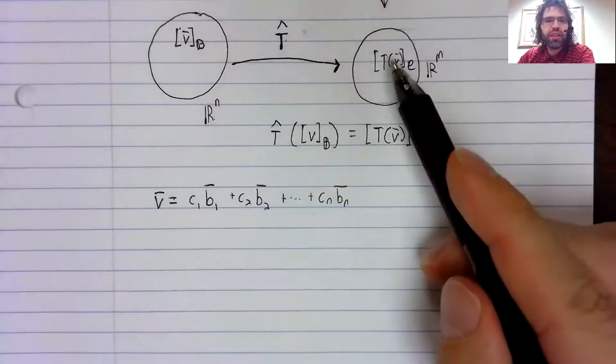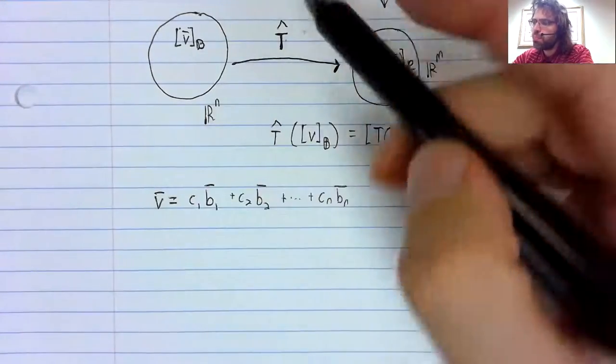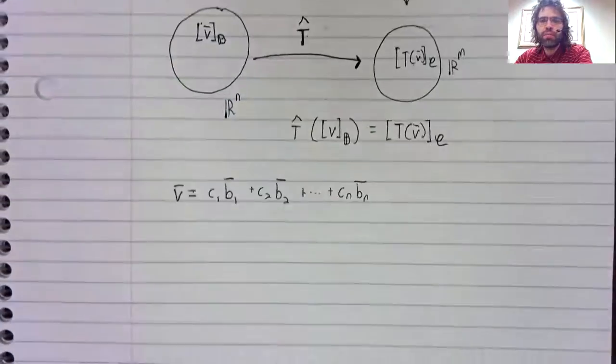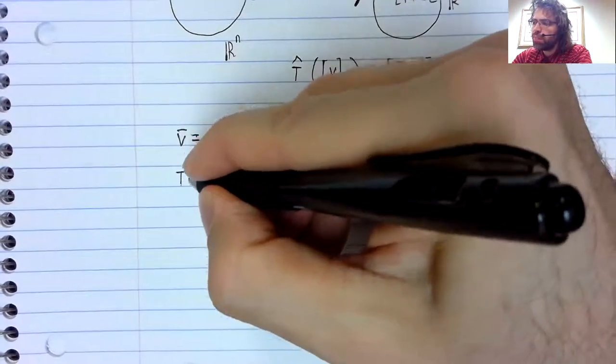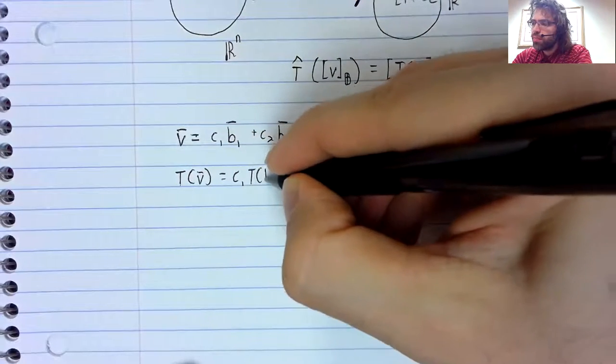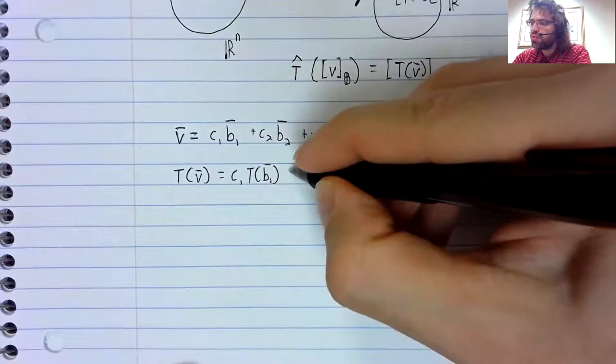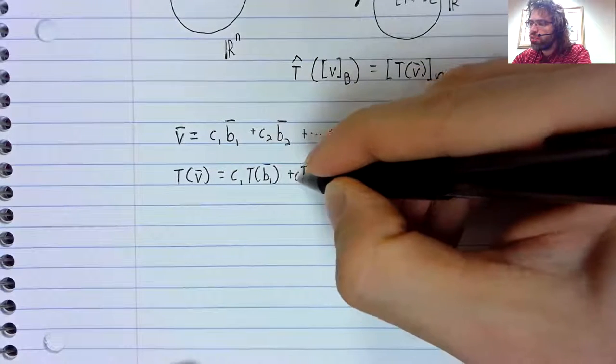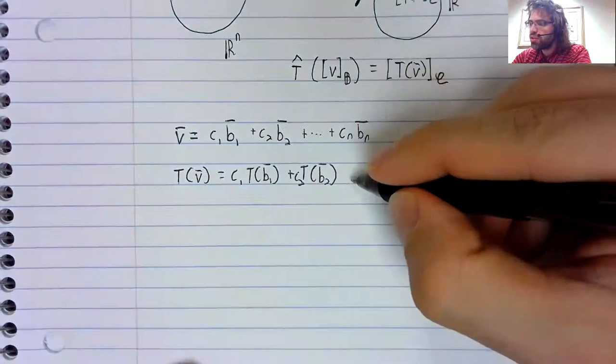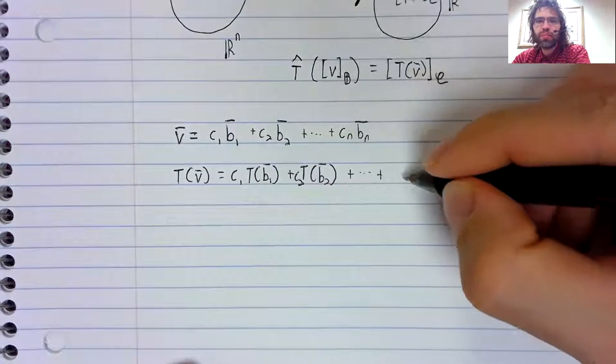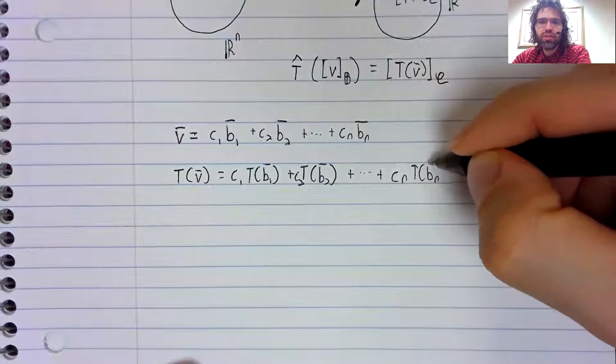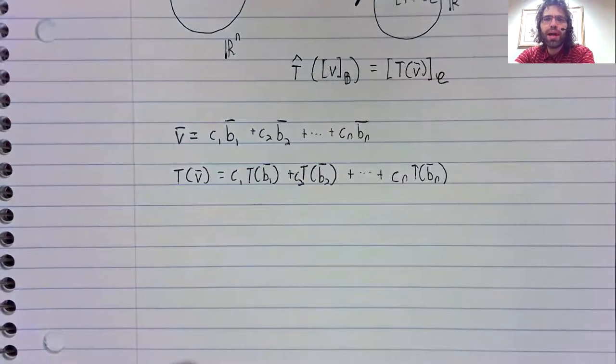Now we're interested in T of V. Remember that this transformation is linear. So when we apply it to V, it works out like this. The transformation applied to a sum is the sum of the transformations and constants pull out.